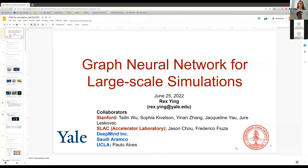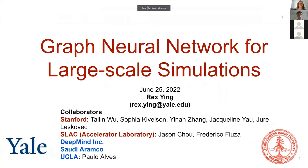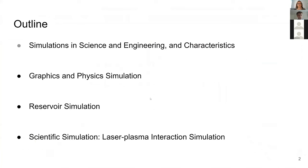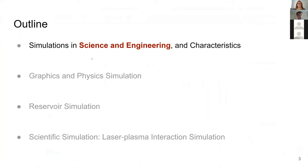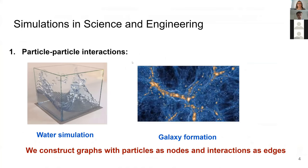This is an example of using GNNs for a simulation task, in collaboration with Stanford, DeepMind, and others. Simulation is important in science and engineering because many interactions can be modeled through it. For example, particle-particle interactions in water simulation are typically represented as particles in a scene that interact to produce changes — and on a larger scale, galaxy transformations involve stars interacting through gravity, resulting in changes to position and velocity. These can all be represented as particle-particle interactions with forces existing between pairs of particles.